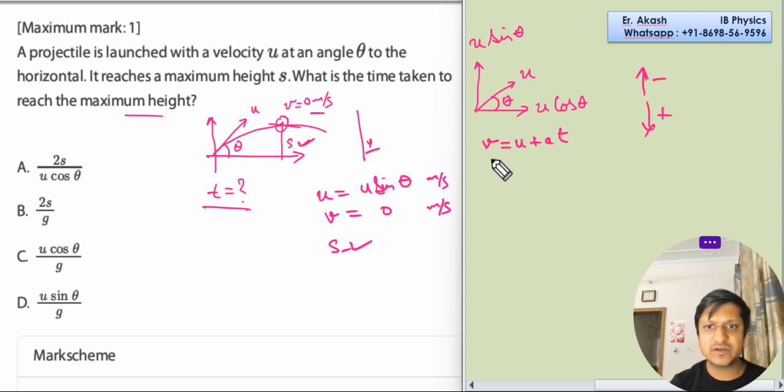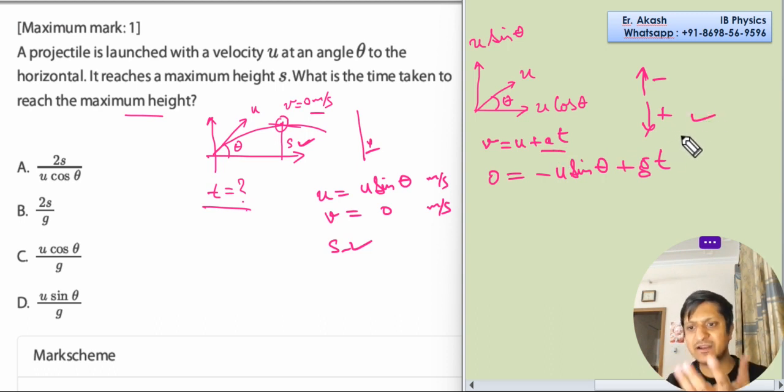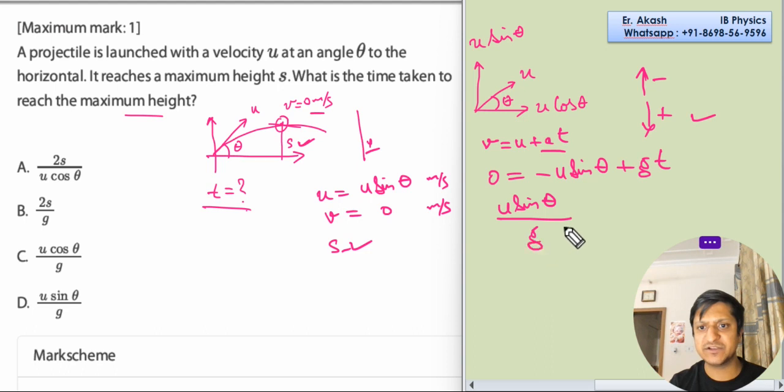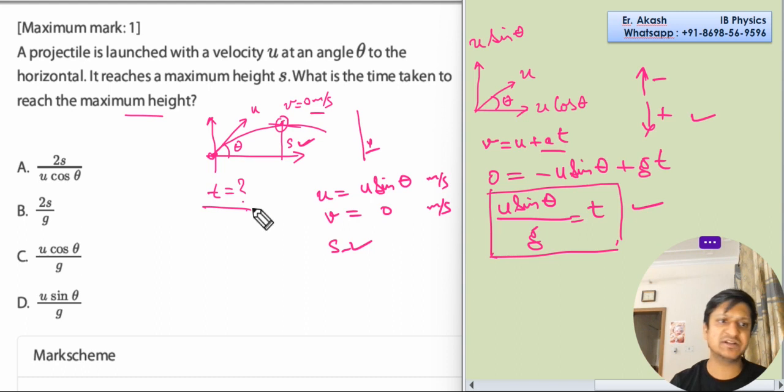We will use the first equation. The final velocity is 0 and the initial velocity upward will be negative u sine theta, and the g part will be plus g t because the gravitational force is acting downwards. So it is a positive sign. U sine theta divided by g equals t. So the time taken to reach from this point to this will be u sine theta divided by g.